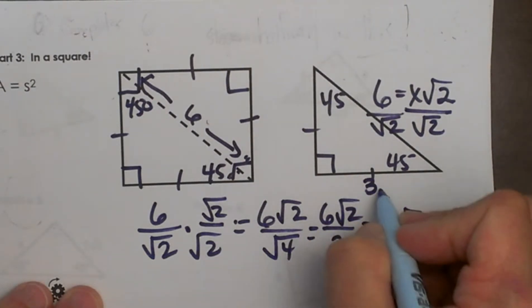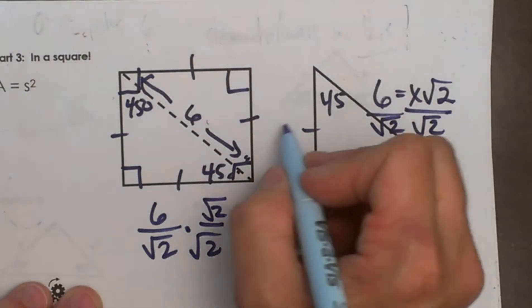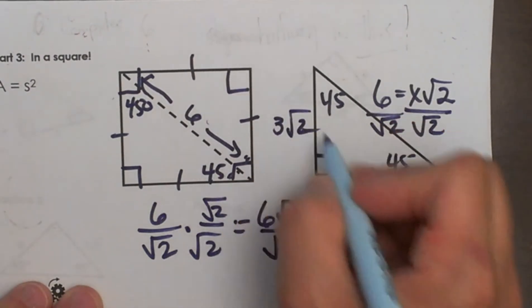So that is the side right here. So I have two legs that match: 3 square root 2 and 3 square root 2.